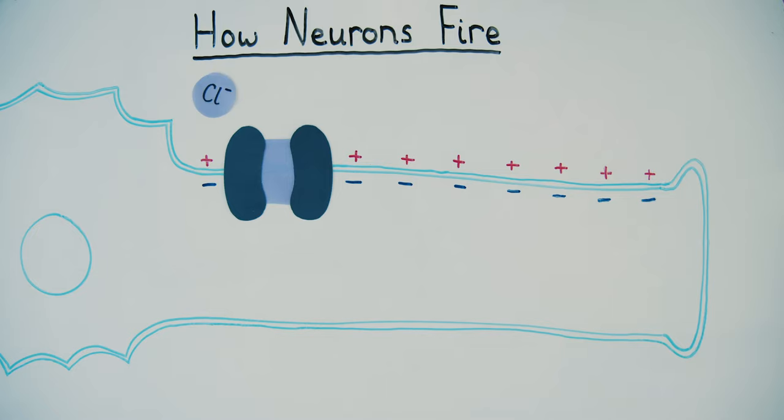Negative ions entering the cell have the opposite effect, making the relative charge inside the neuron more negative, inhibiting firing.